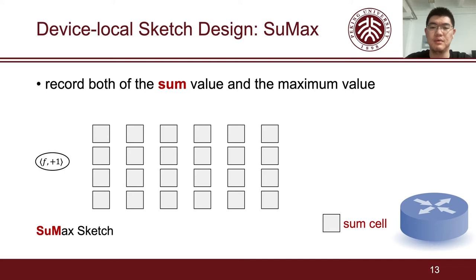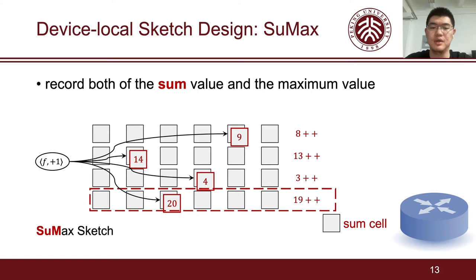The sum cells can be used to record the number of packets or bytes, the number of out-of-order packets, and more. These cells can be updated in the CM manner. That is, increment all hashed cells by one. The query operation is also the same as CM, which returns the minimum value among the hashed cells.